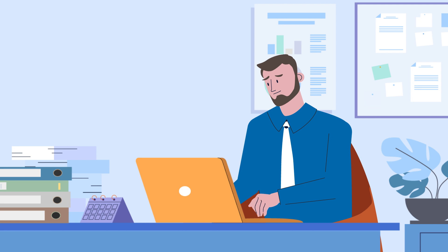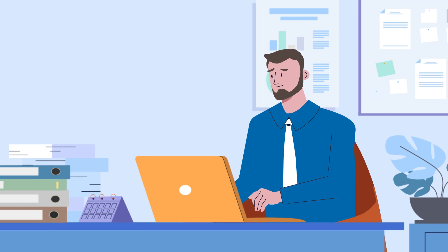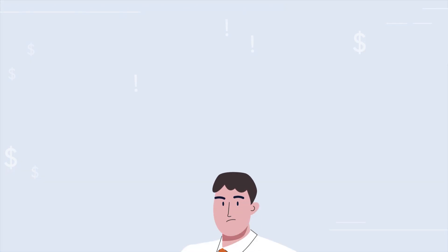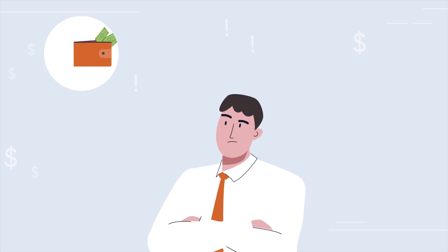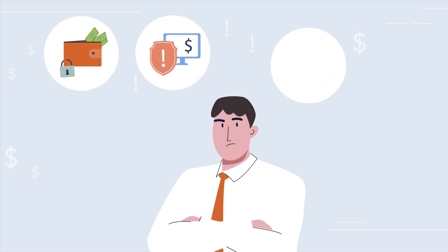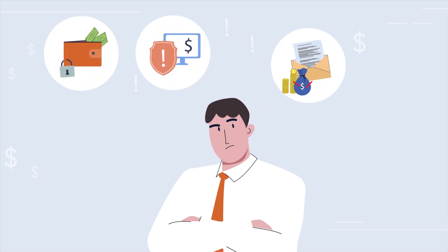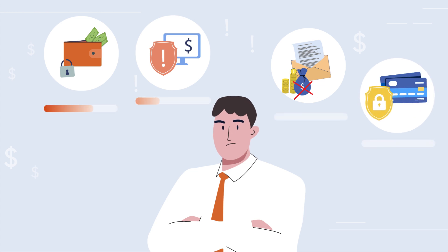Some instances where a bankruptcy trustee may apply to have the bankruptcy period extended could be that the bankrupt fails to make a contribution payment, deliberately provides false or misleading information, or fails to disclose a beneficial interest in property.